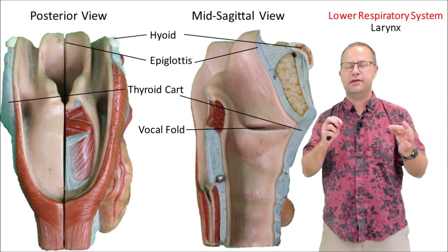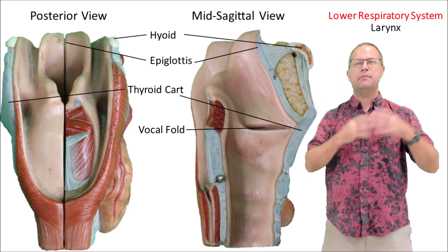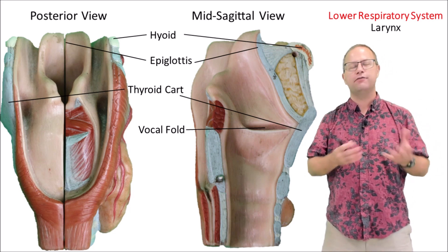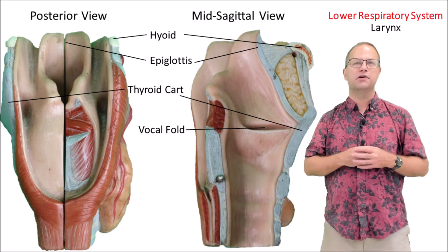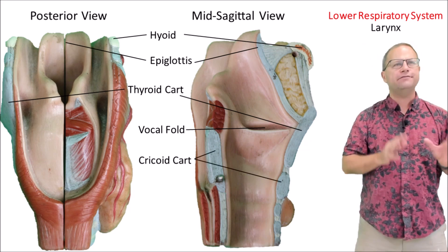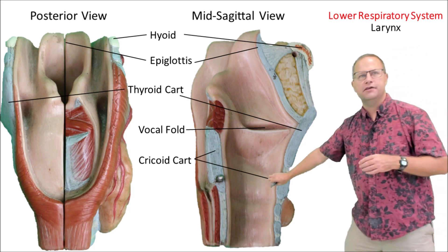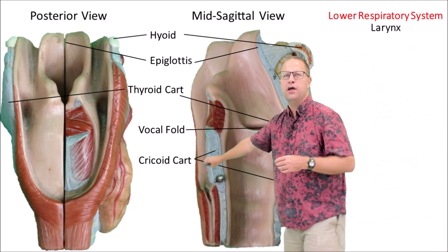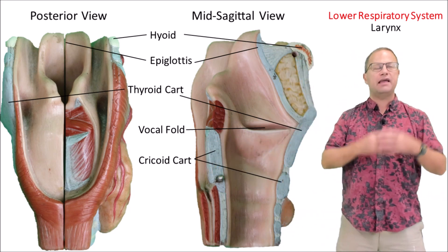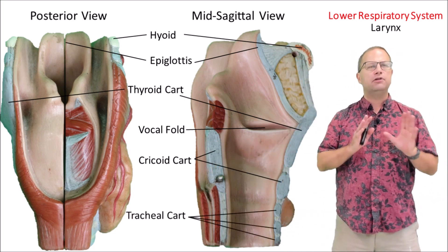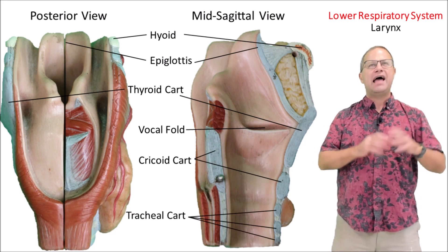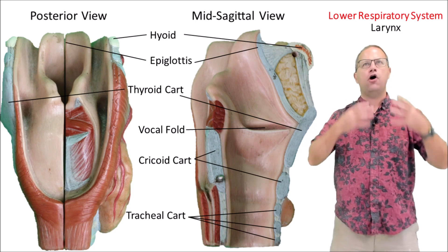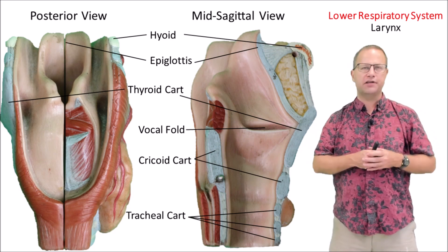Because men have larger larynxes than females on average, they tend to have longer vocal cords and lower voices. Inferior to the vocal folds we have our cricoid cartilage, which seems fairly minor in the front but makes up a large part of the larynx in the posterior view. Below that we have our tracheal cartilages, whose purpose is to hold the trachea open — keeping it patent and open so we can have effective and efficient breathing at all times.